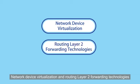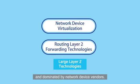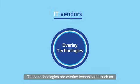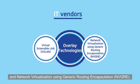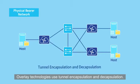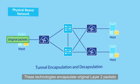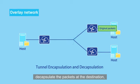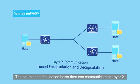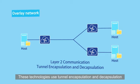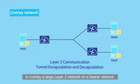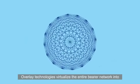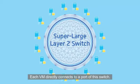Network device virtualisation and routing layer 2 forwarding technologies are proposed and dominated by network device vendors. Technologies of the third type are proposed by IT vendors. These are overlay technologies such as virtual extensible LAN (VXLAN) and network virtualisation using generic routing encapsulation (NVGRE). Overlay technologies use tunnel encapsulation and decapsulation. They encapsulate original layer 2 packets sent by a source host, transparently transmit the packets on the existing bearer network, decapsulate them at the destination and forward the decapsulated packets to the destination host, enabling layer 2 communication. This overlays a large layer 2 network on a bearer network, hence the name overlay technologies. Overlay technologies virtualise the entire bearer network into a super large layer 2 loop-free switch, and each VM directly connects to a port of this switch.